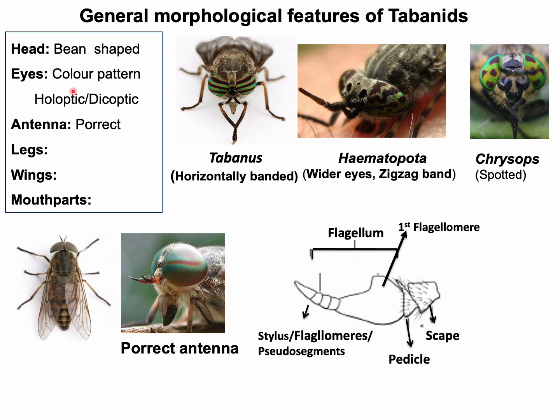Males and females can also be differentiated based on their eyes. In males, the eyes are holoptic — that is, both eyes are closely located together. In females, it is dichoptic, meaning there is more of a gap between the two eyes. The antenna is erect, directed forward.